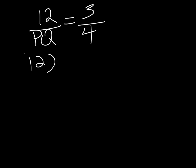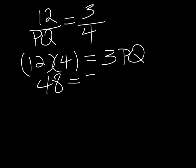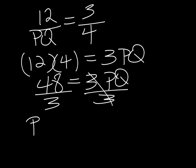So 12 times 4 is equal to 3 times PQ. 48 is equal to 3 times PQ. Divide both sides by 3. 48 over 3 is equal to PQ, and 48 over 3 is 16. So PQ is equal to 16.